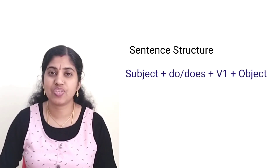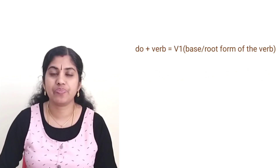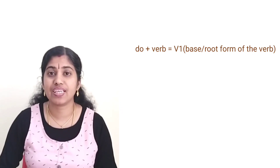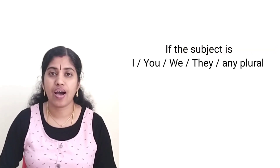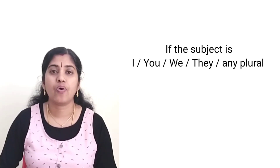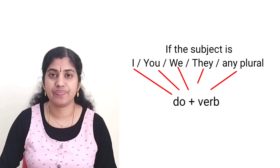It is very simple to form. Sentence structure: subject plus do or does plus verb plus object. Do plus verb means base form or root form of the verb. If the subject is I, you, we, they, or any plural, we use do plus verb.